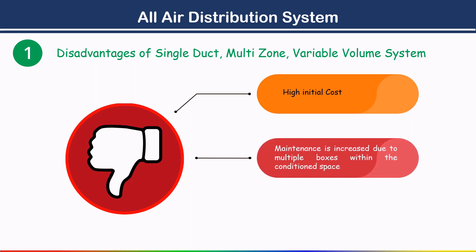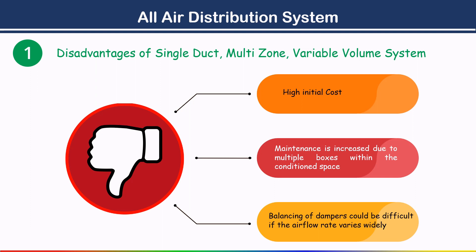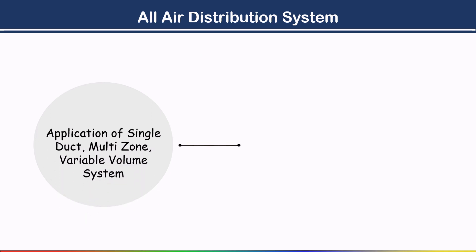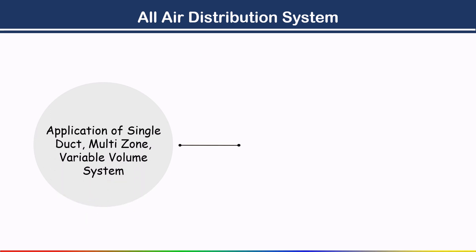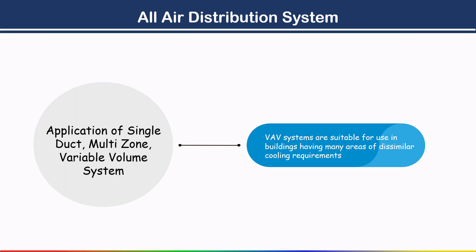Second disadvantage: maintenance is increased due to multiple VAV boxes installed at each branch before each room. Third, balancing of dampers could be difficult if the air flow rate varies widely. Regarding applications, VAV systems are suitable for use in buildings having many areas with dissimilar cooling requirements.